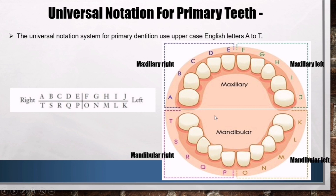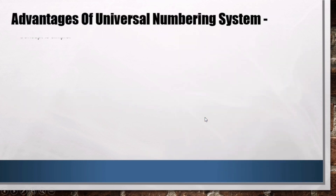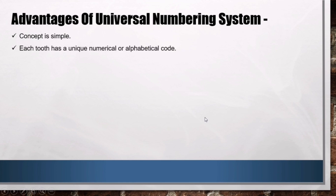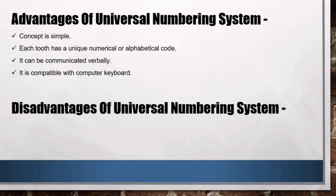Advantages of the Universal Numbering System: the concept is simple, each tooth has a unique numerical or alphabetical code, it can be communicated verbally, and it is compatible with the computer keyboard. Disadvantages: it is difficult to memorize the notation of each tooth and also difficult to visualize.